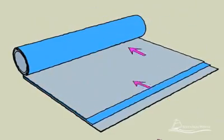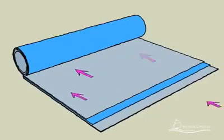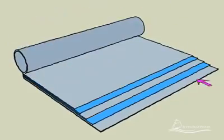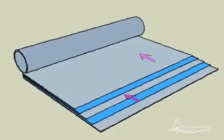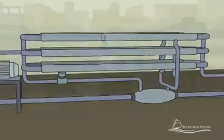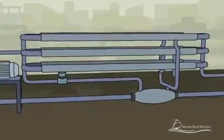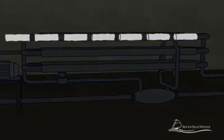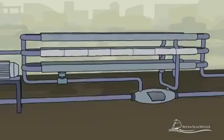The reverse osmosis membrane can be thought of as a number of sealed envelopes connected at their open ends to a tube. There are spacers between each envelope which allow water to flow across the membranes. The membrane envelopes and spacers are then wound around the tube like a roll of paper towels. The reverse osmosis membranes are then enclosed in a fiberglass shell, connected end-to-end — usually six to seven membranes together — and housed in vessels built to withstand pressures up to 1,200 psi.